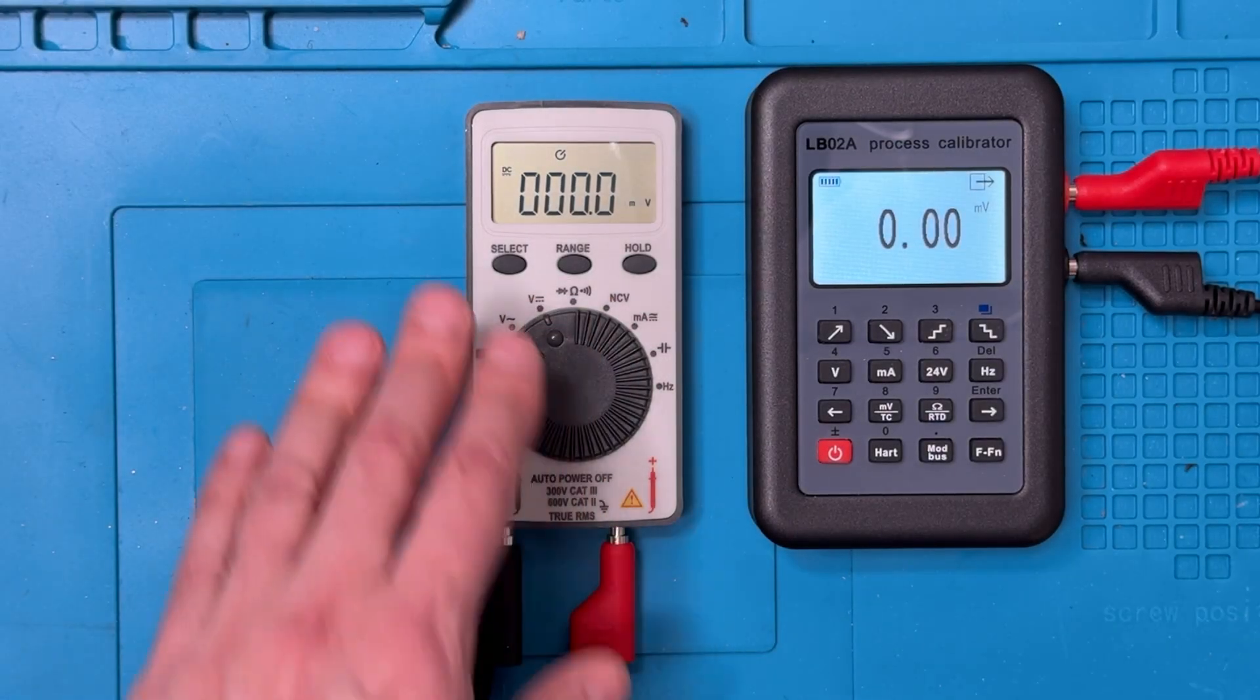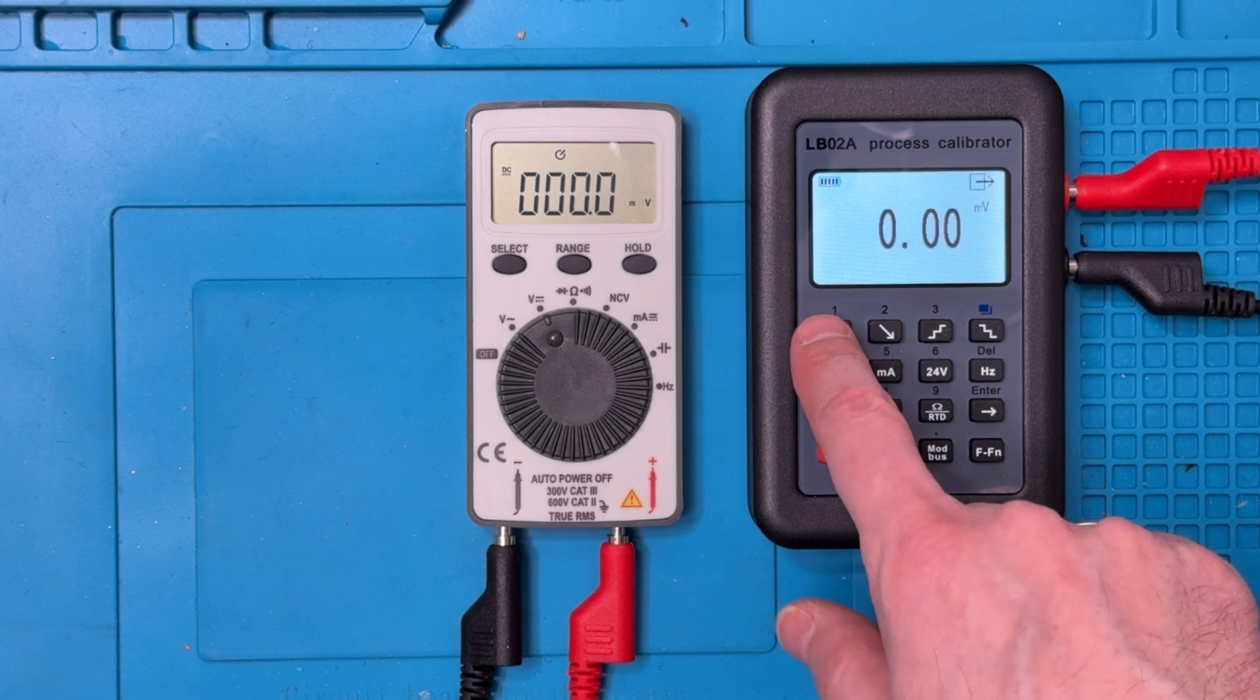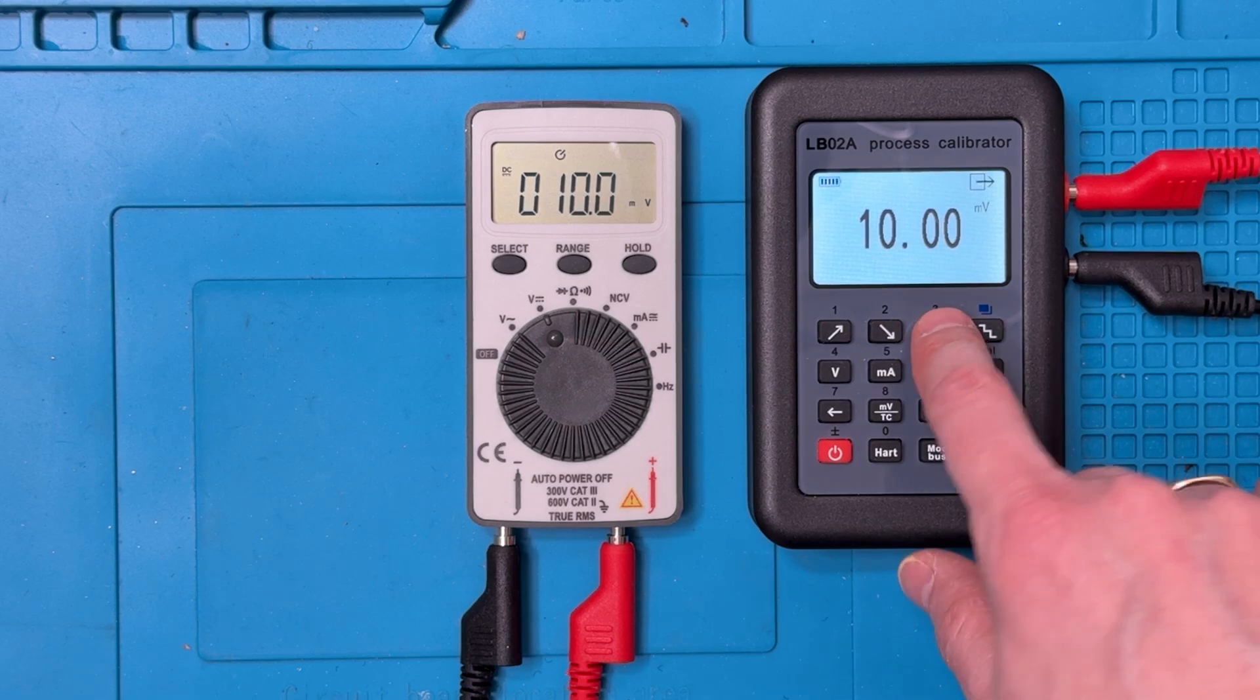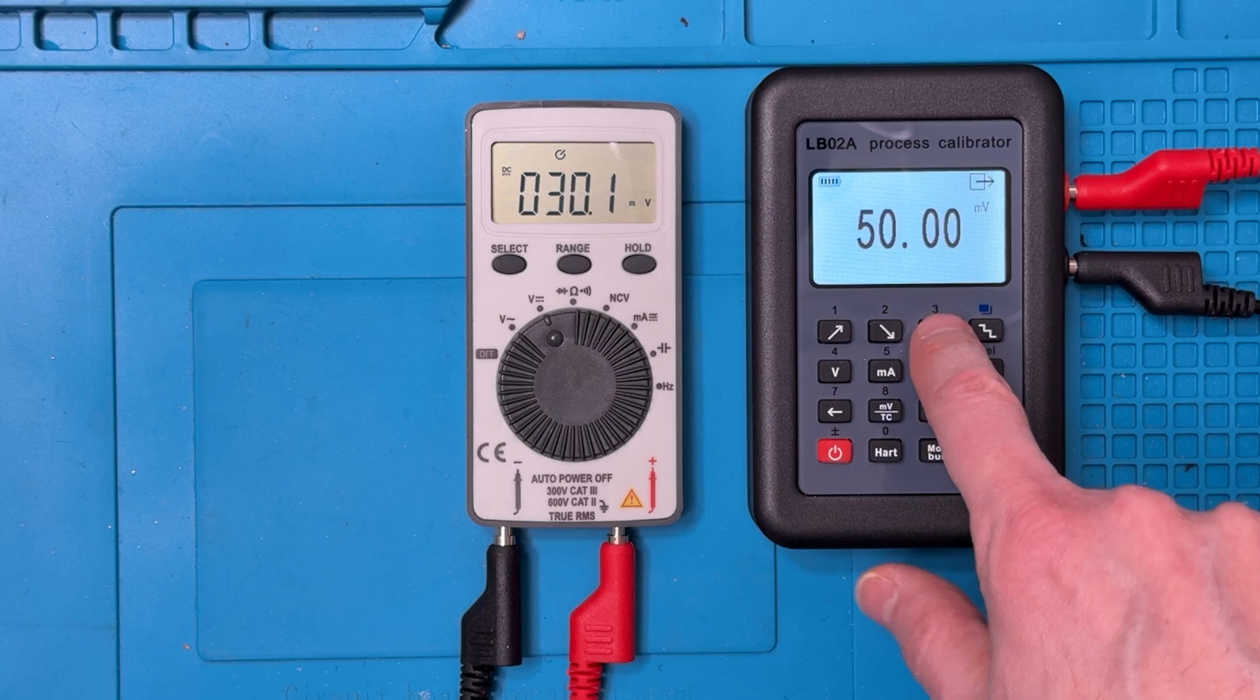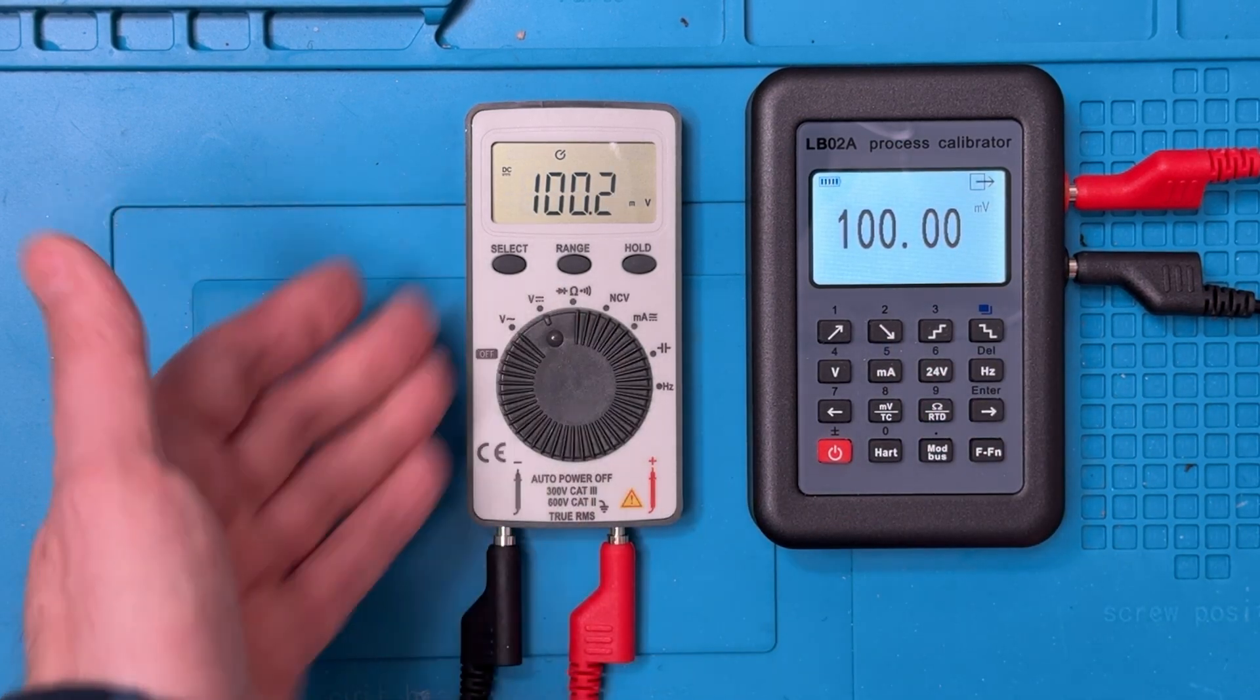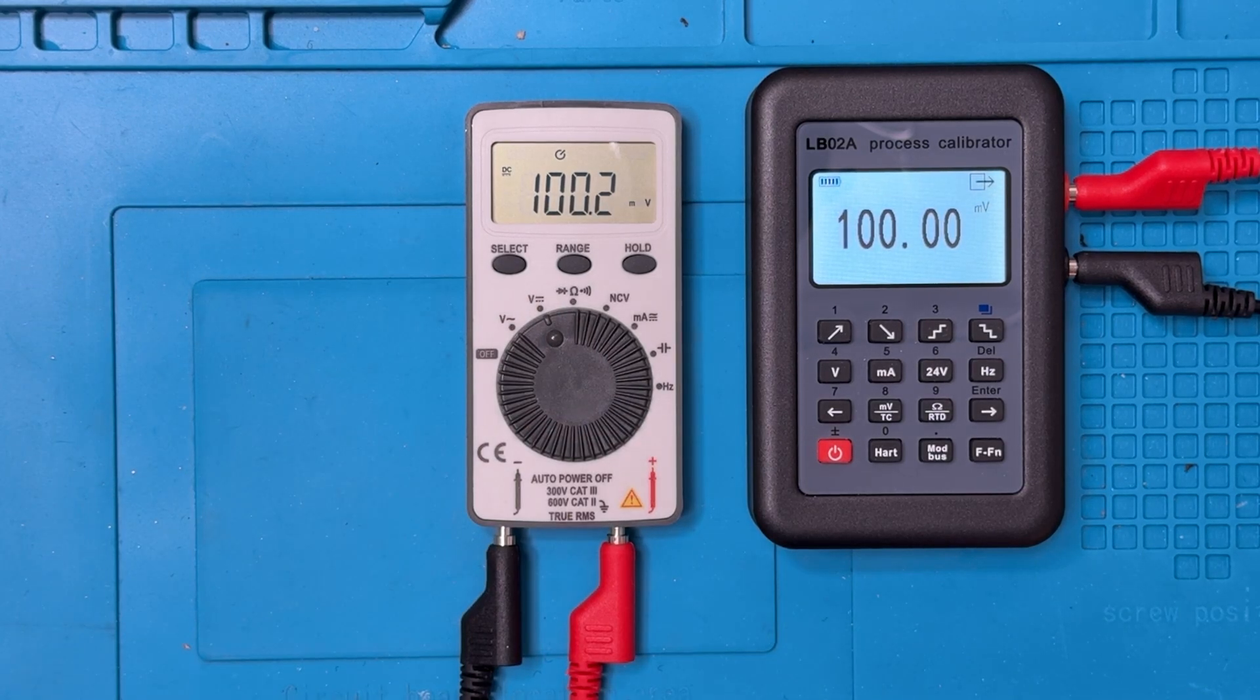Now millivolts. I've got the meter in millivolt range. Reference source set for millivolts. We'll just bring that up to one millivolt, one millivolt on the meter. 10 millivolts, 10 millivolts on the meter. Look at that, that's fantastic. 20 millivolts, 20 on the meter. I'm not sure how high this goes. We'll go to 100. 100 millivolts. 100.1.2. That's still a really, really good showing. So millivolts work very well.